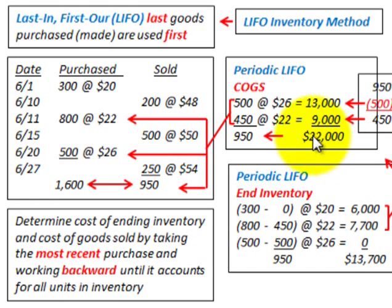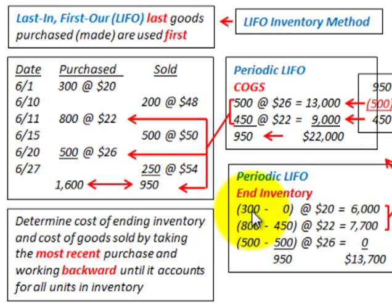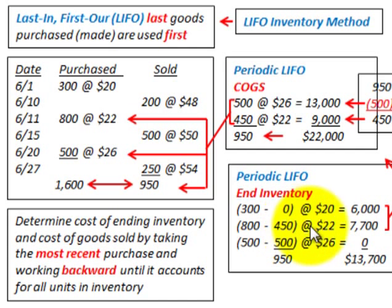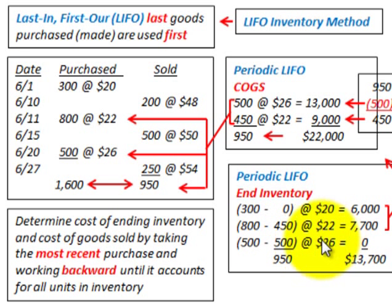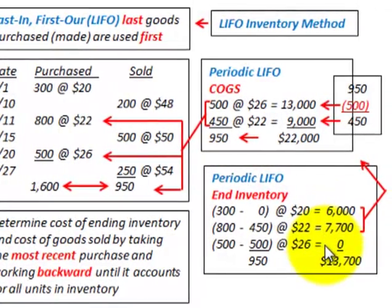Now for ending inventory under periodic LIFO: the oldest 300 units were unused at $20 each, giving $6,000. Of the 800-unit batch, we used 450, so the remaining 350 units at $22 each go into ending inventory for $7,700. All 500 of the most recent purchases were used up, so nothing remains from that batch. Total ending inventory is $13,700.